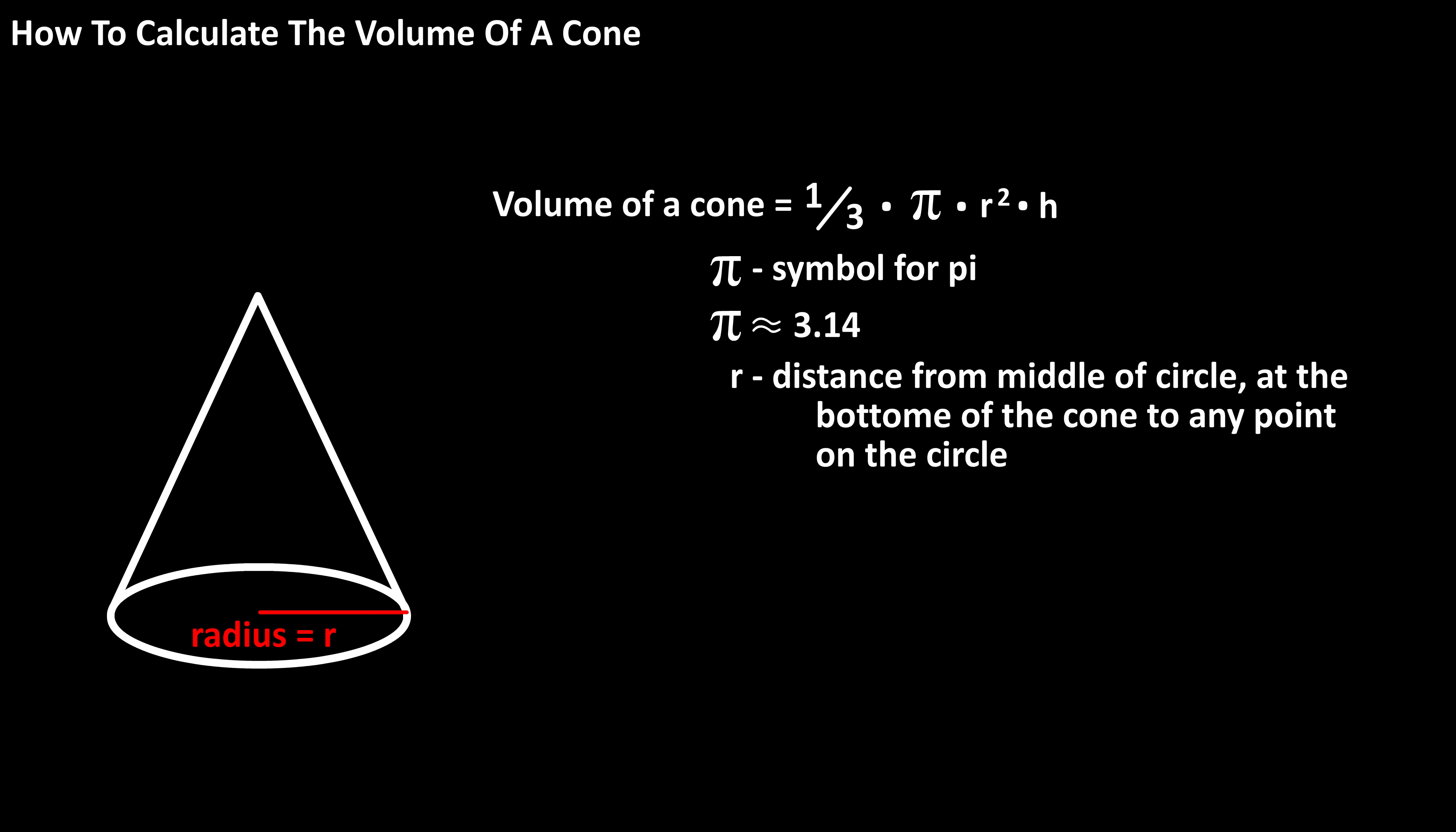R is the radius of the circle at the bottom of the cone, which is the distance from the middle of the circle to any point on the circle, and h is the height of the cone.